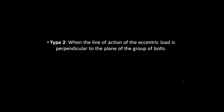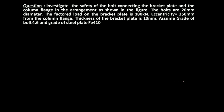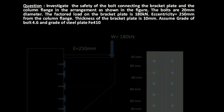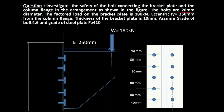Today we are going to solve a problem on Type 2 of eccentric bolted connections, which is when the line of action of the eccentric load is perpendicular to the plane of the group of bolts. The question says: investigate the safety of the bolt connecting the bracket plate and the column flange. The bolts are 20 mm diameter, the factored load on the bracket plate is 180 kN, eccentricity is 250 mm, thickness of bracket plate is 10 mm, grade of bolt is 4.6, and steel grade is Fe 410.